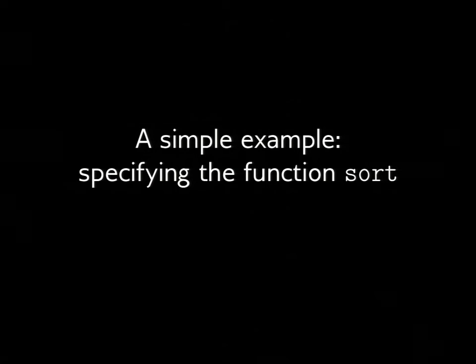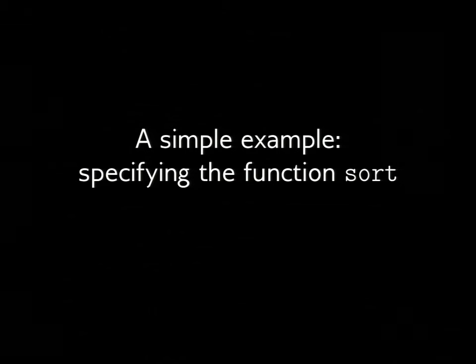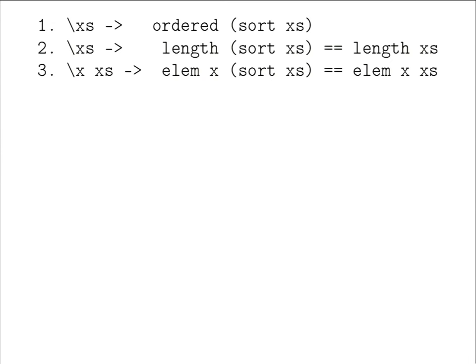A simple example: specifying the function `sort`. Here are three properties from the introduction — a sorted list must be ordered, the length must not change, and the elements should not change relative to the original list. Is this minimal and complete? What do we do? Pass them to FitSpec.